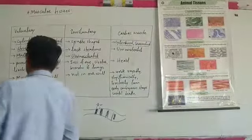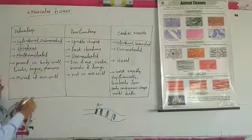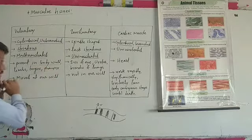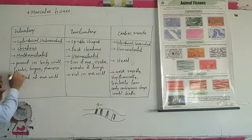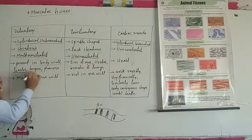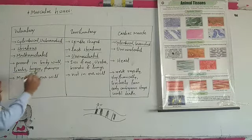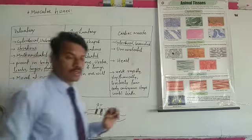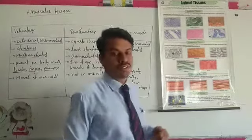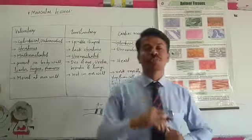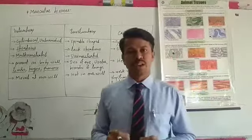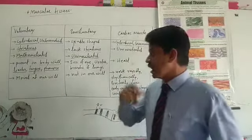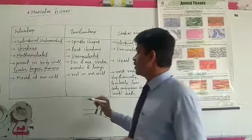Voluntary muscles are present in the body wall, in our limbs, in the tongue, in the pharynx, and in the initial part of the esophagus.